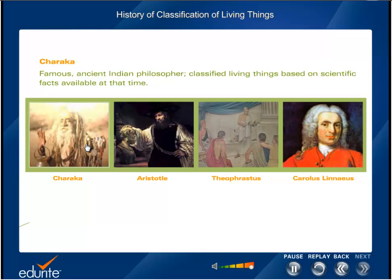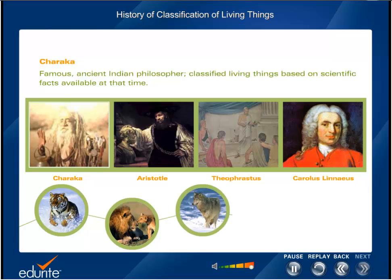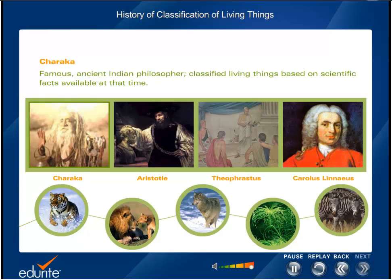As civilization progressed, learned men and philosophers tried to classify living things. Charaka was one such famous ancient Indian philosopher who classified living things based on scientific facts available at that time.